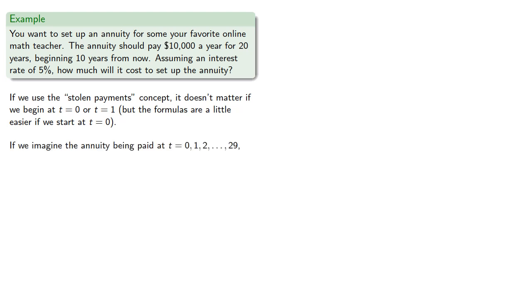So if we imagine the annuity being paid at t equals 0, 1, 2, and so on up to 29, but the first payments from t equals 0 to t equals 9 are stolen, then the present value of the annuity...